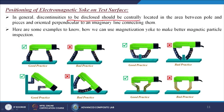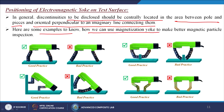Adjustable legs permit changing the contact spacing and relative angle of contact to accommodate irregularly shaped parts. Regarding positioning of the electromagnetic yoke on the test surface: discontinuities to be disclosed should be centrally located in the area between the poles and oriented perpendicular to an imaginary line connecting them. Here are some examples showing how to use the magnetization yoke for better results — items shown in green represent good practice or correct positioning, while items shown in red with a cross mark represent bad practice or incorrect positioning.